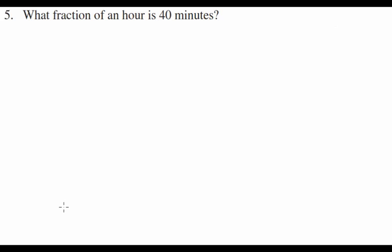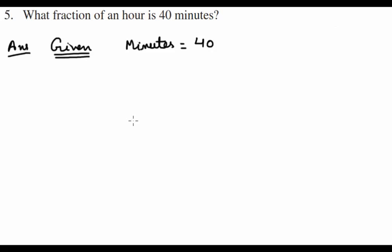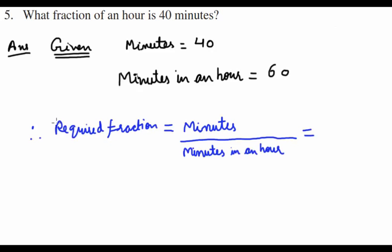Fifth question: what fraction of an hour is 40 minutes? We are given total number of minutes as 40, and we have to know total minutes in an hour, which are 60. Therefore the required fraction would be minutes over minutes in an hour, and the fraction becomes 40 over 60.